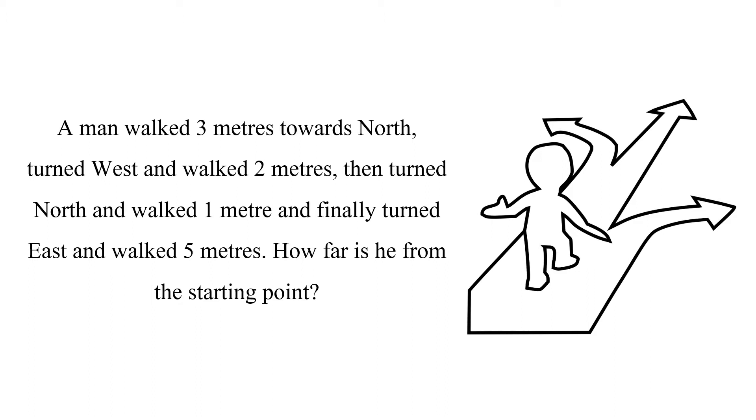The question is, a man walked 3 meters towards north, turned west and walked 2 meters, then turned north and walked 1 meter, and finally turned east and walked 5 meters. How far is he from the starting point?